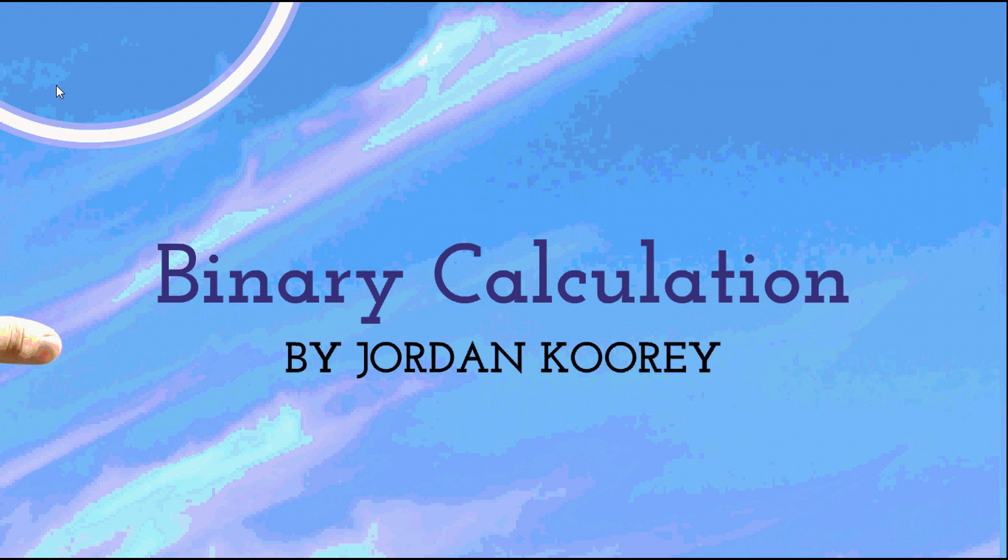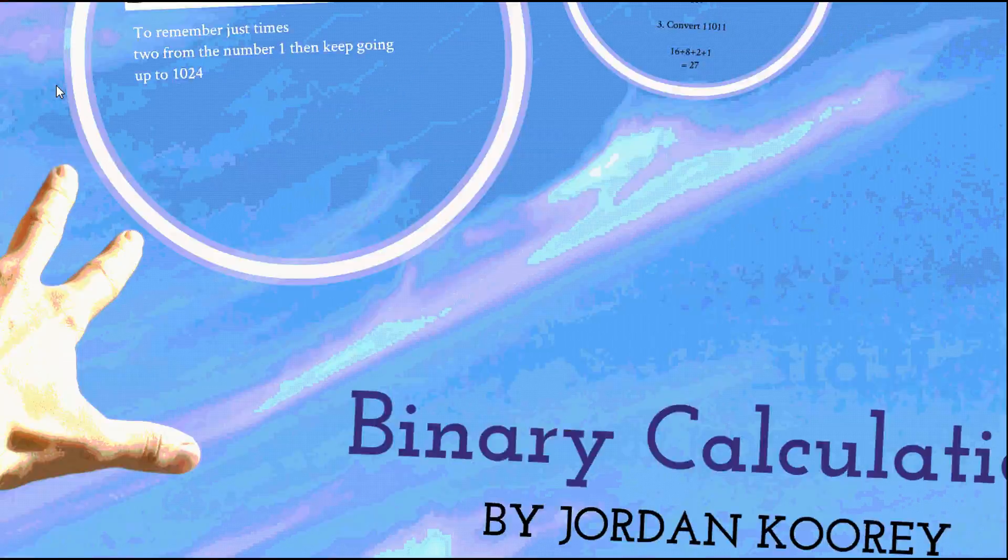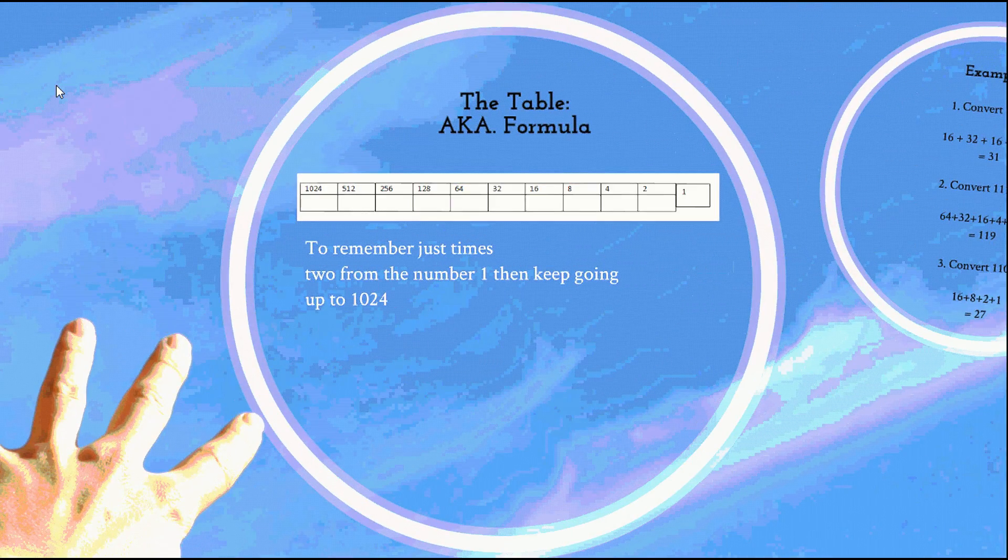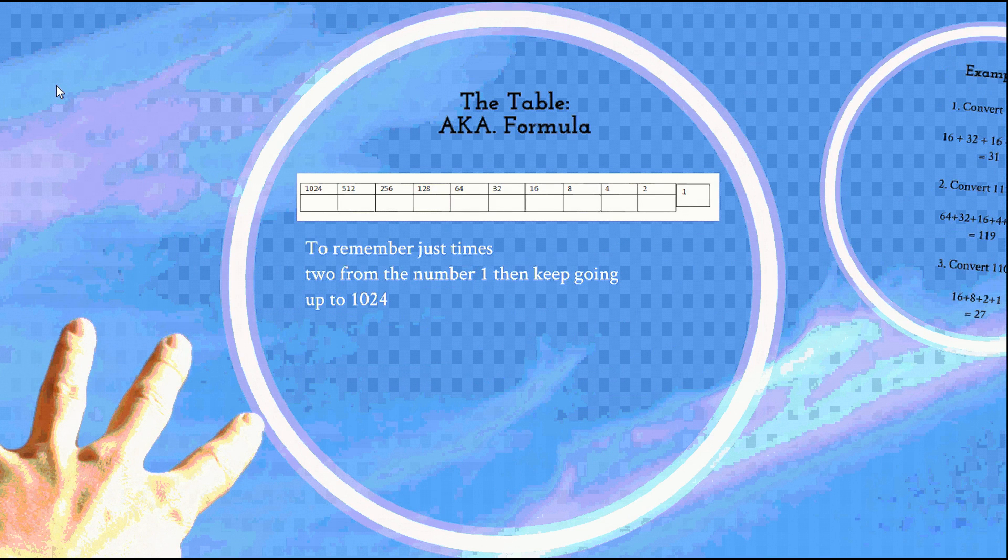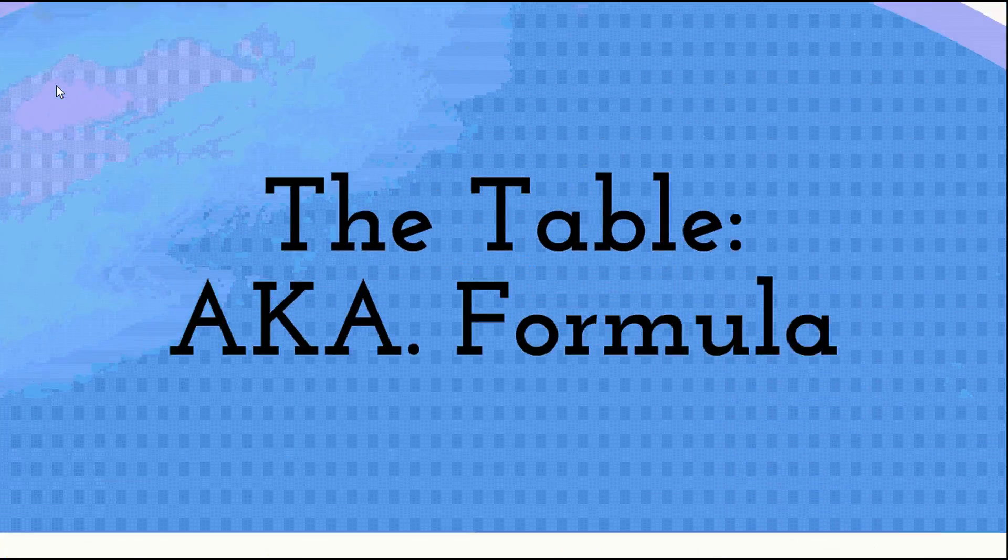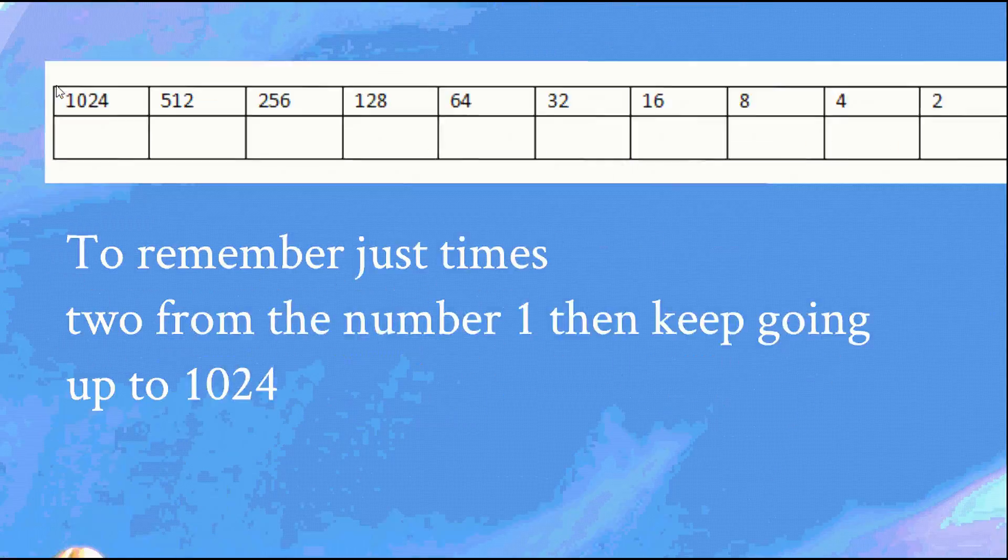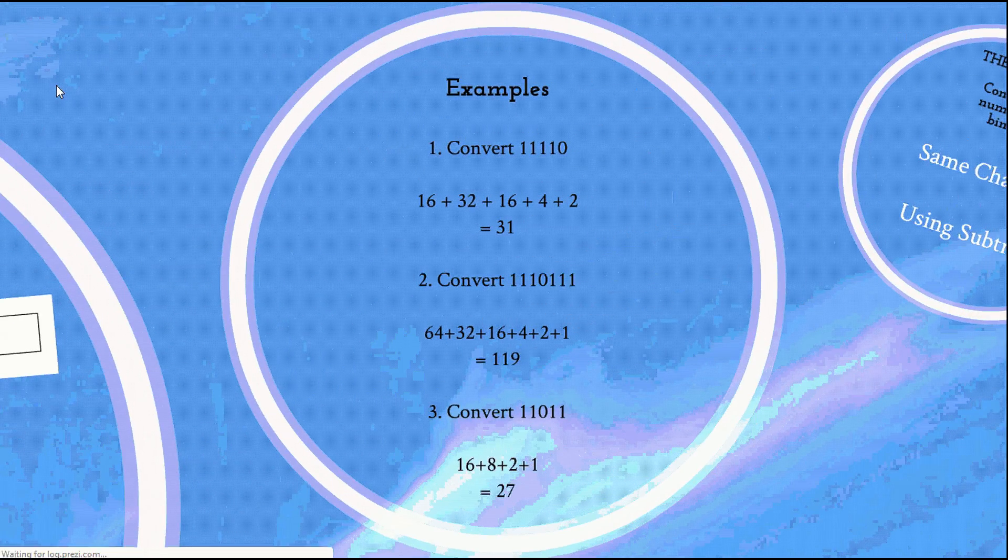Okay, here's a quick tutorial on binary calculation by me. The table, or formula to remember, is just times two from the number one, then keep going up to 1024. So that's how you sort out your table.